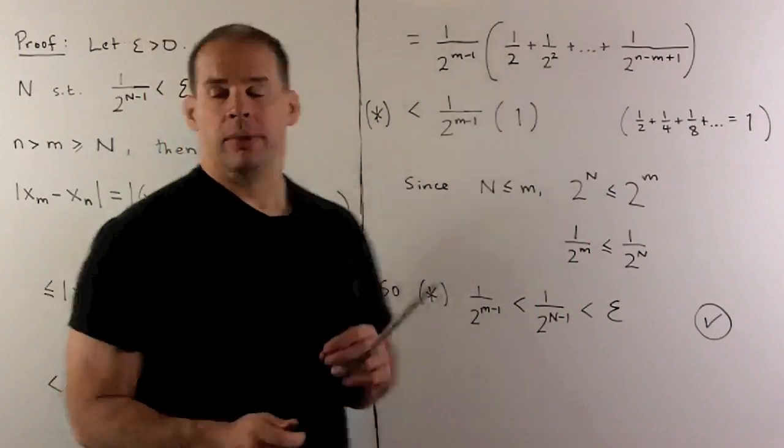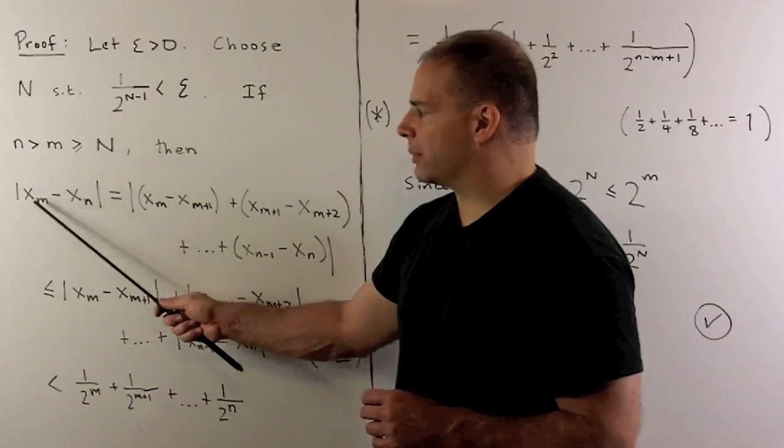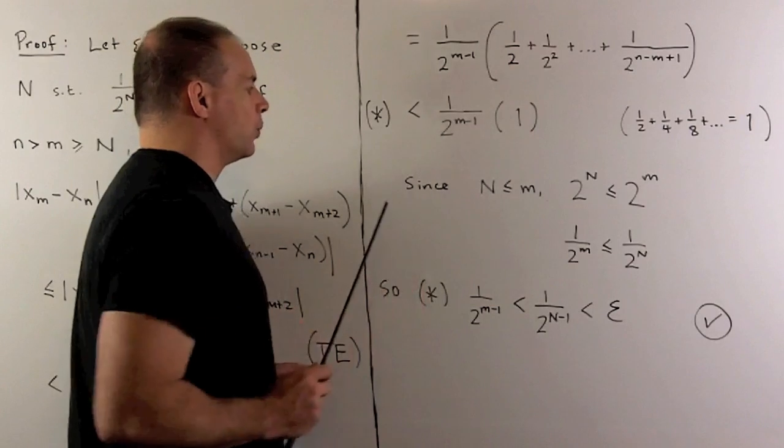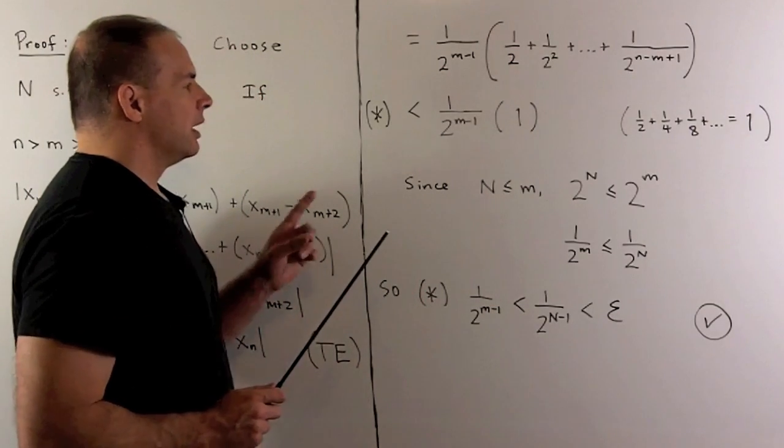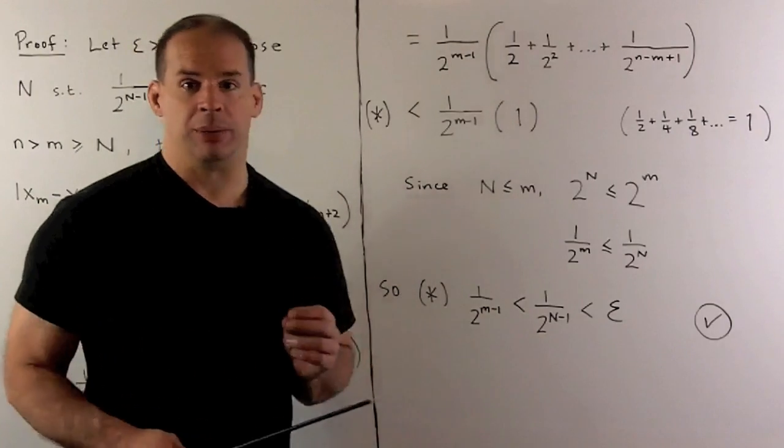That says our term here, the absolute value of the difference of x_m and x_n, is less than or equal to 1/2^{n-1}. This is going to let me figure out how to determine what capital N should be.